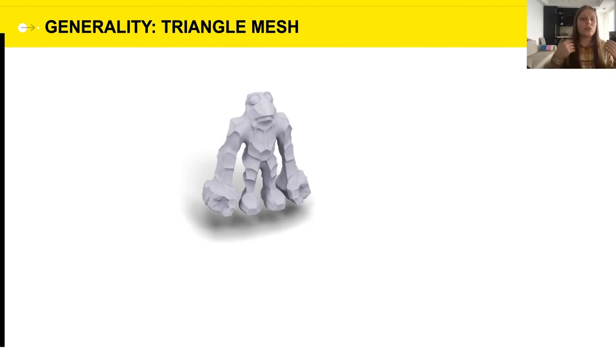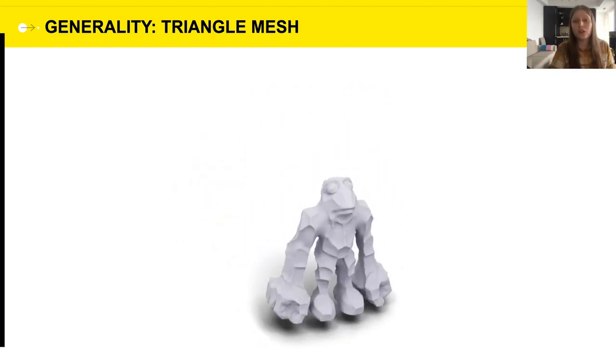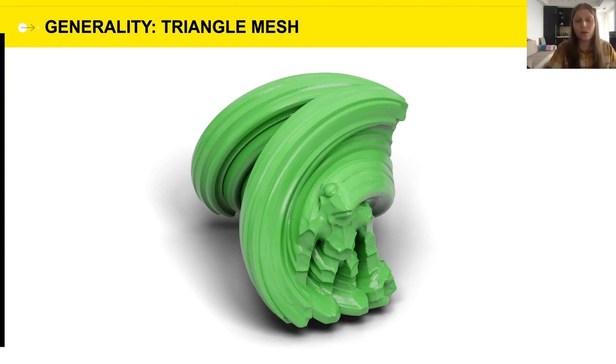Of course, the most common shape representation, whatever the machine learning people want to say, is still going to be a triangle mesh, and since we can compute signed distances from triangle meshes to any point in space, we can similarly recover their swept volume.